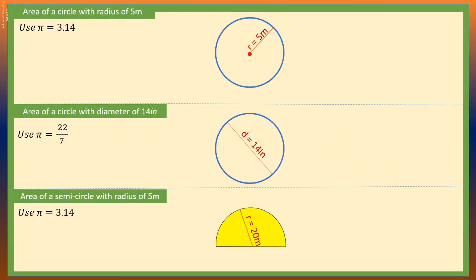To find the area of this circle with radius 5 meters, we use the formula A equals pi R squared. That means A equals pi times radius times radius. Taking pi to be 3.14, we can use a calculator and get 78.5 square meters.